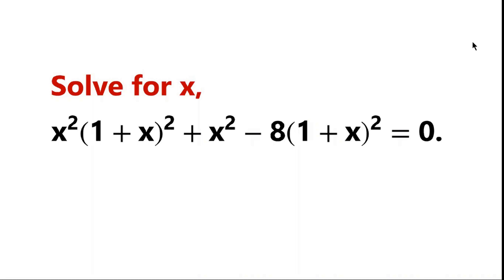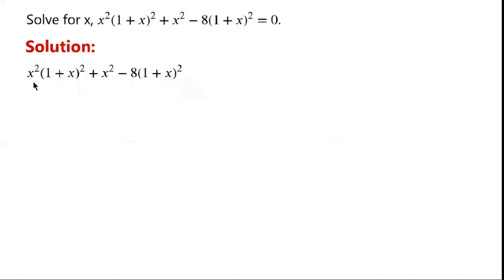Solve for x: x squared times (1 plus x) 4 squared plus x squared minus 8 times (1 plus x) 4 squared equals 0. This is the left-hand side of the equation.